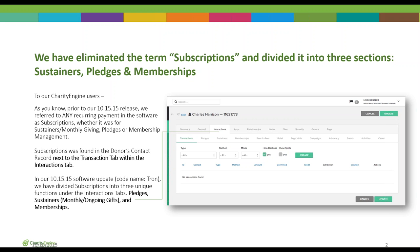Prior to the most recent release, we referred to any recurring payment in the software as subscriptions — whether it was for sustainers doing monthly giving, pledges, or membership management. Subscriptions was found in the donor's contact record next to the transaction tab, which is in the interactions tab. Now when you look at it next to transactions, it says pledges, sustainers, and memberships — three unique functions for ongoing or recurring participants in your organization.